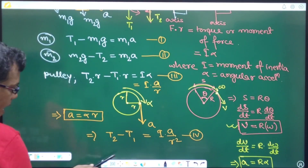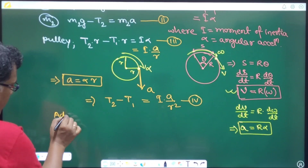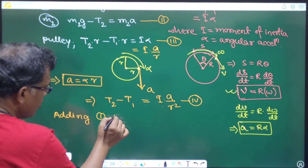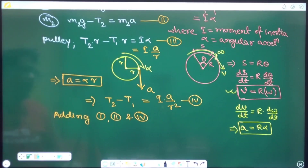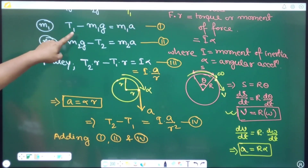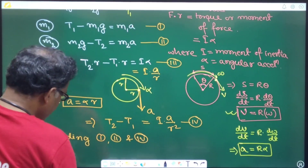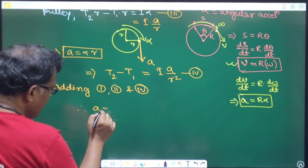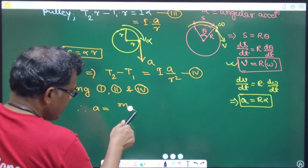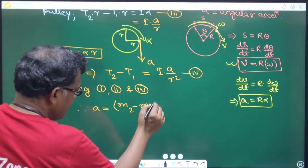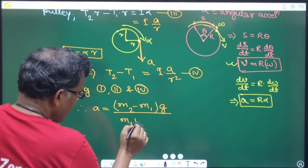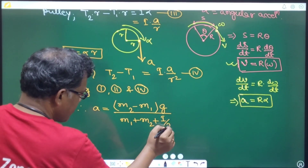Adding equations (1), (2), and (4): the left-hand side becomes M2g - M1g, and the right-hand side gives a·(M1 + M2 + I/r²). Therefore the acceleration is: a = (M2 - M1)·g / (M1 + M2 + I/r²).